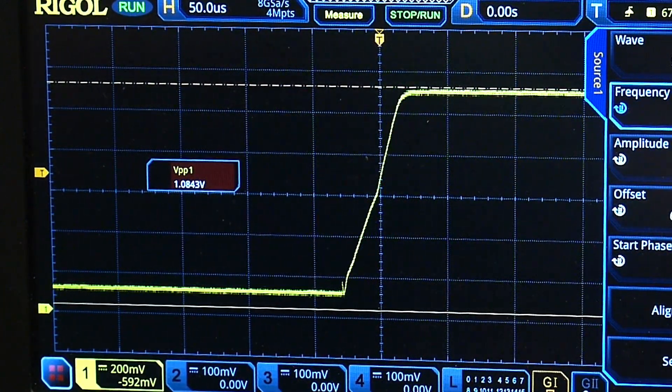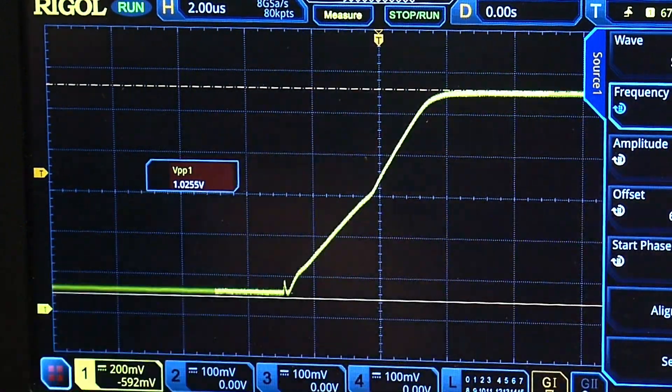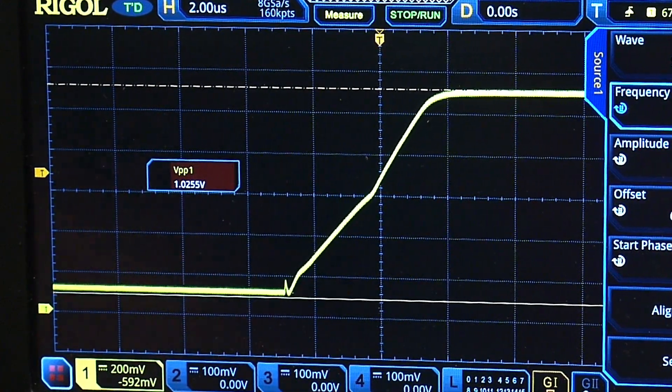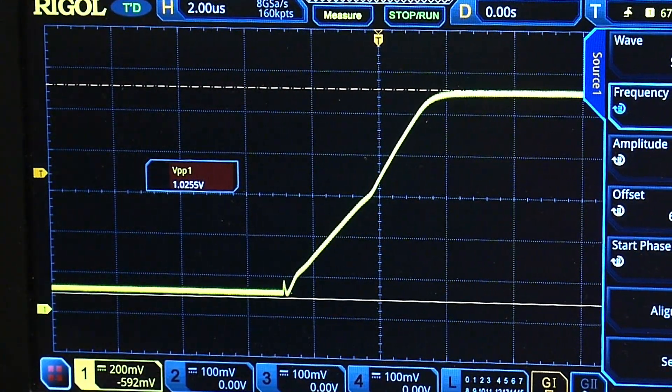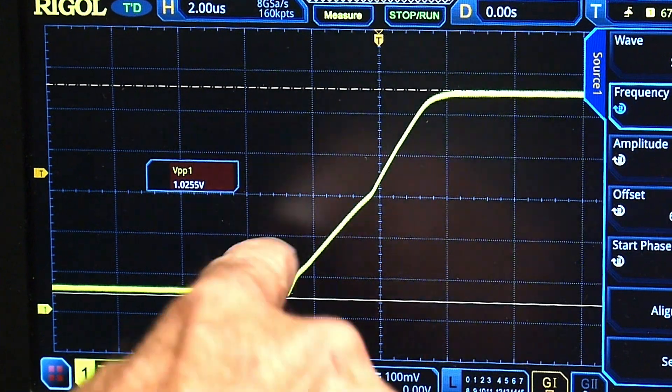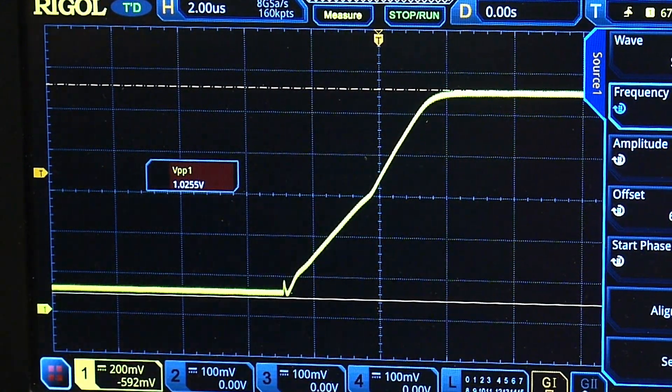And if I zoom in, you can see that we're kind of slew rate limited in a weird way. So we have two microseconds per division. So we have about a four microsecond rise time on this edge. And it's kind of like got a kink in the middle. It's kind of weird.